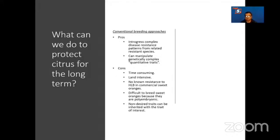Citrus is also a big tree so you need a lot of land. You cannot breed sweet oranges because they are polyembryonic, and as with any breeding program, non-desired traits can be inherited with the trait of interest. Citrus latipes is resistant to Huanglongbing but it also has several negative traits that it passes to its progeny. Conventional breeding is a very long-term approach and Florida citrus growers do not have the flexibility to wait 15 to 20 years for a conventionally bred HLB-resistant cultivar.